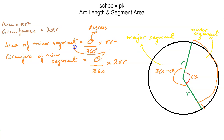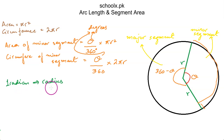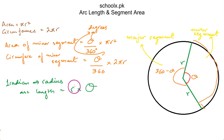Now, what if θ is given in radians? We know that one radian gives an arc length equal to the radius of the circle. The greater the radian value, the greater the arc length. This leads to the formula: arc length = r × θ, where θ is in radians. If θ equals one, arc length equals r, which is just the radius.